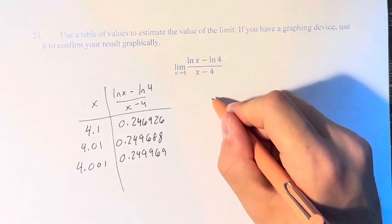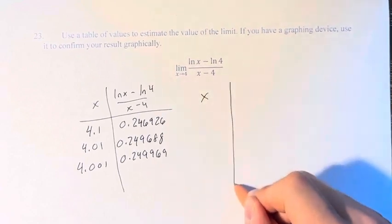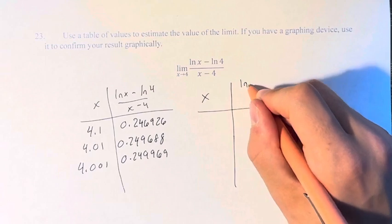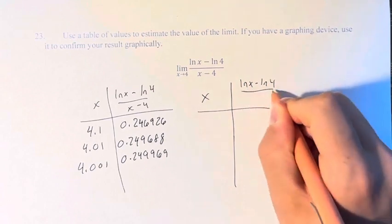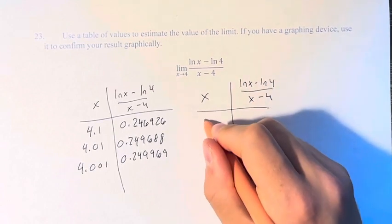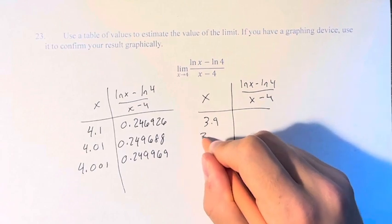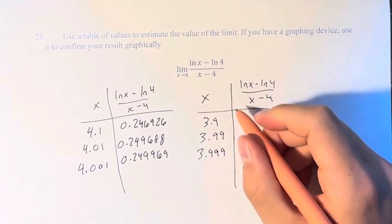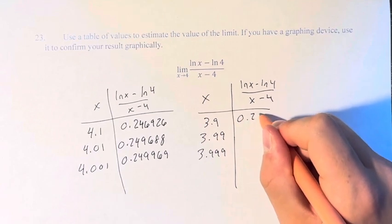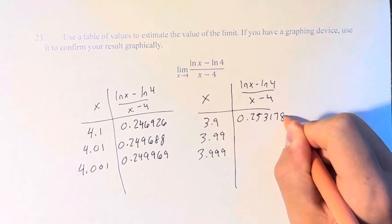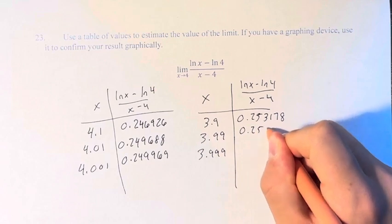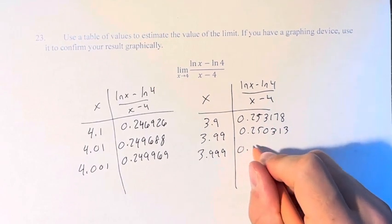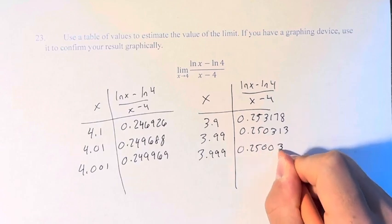We also have to try it from the left. So values that are less than 4 but approaching it. Again, plugging it into the same fraction. For 3.9, 3.99, 3.999, we get values of 0.253178, 0.250313, and 0.250031.